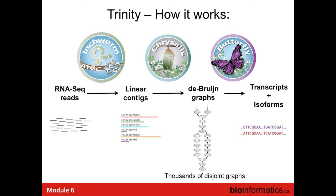Inchworm takes the RNA-seq reads and builds contigs very fast — but they're a draft, not a final product of transcriptome assembly. It basically takes unique k-mers from the reads and uses greedy extension to build contigs. Once we have these linear contigs, they essentially represent the unique parts of isoforms. A full-length transcript isoform might be represented by a few different Inchworm contigs.